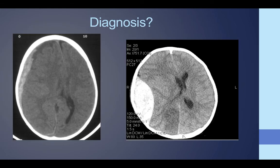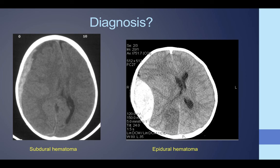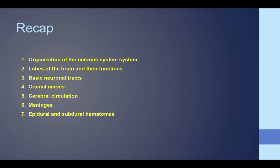Here are two CT images of the head. On the left, you can see a crescent shape — a subdural hematoma, not confined by the dura. On the right, a biconvex lens shape — an epidural hematoma, where the dura remains attached at two endpoints so bleeding is confined. That's a quick recap of how the nervous system is organized, along with arterial supply to the brain. The cases and the next lecture by Elise will give more clinical scenarios of how patients might present with a stroke or hematoma.